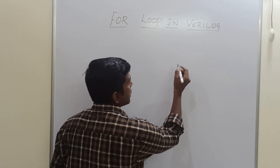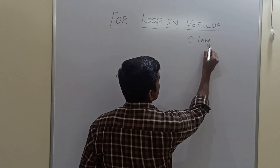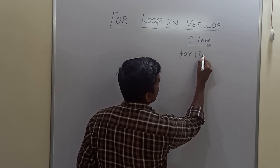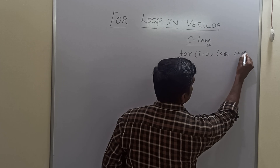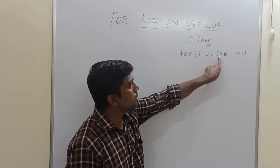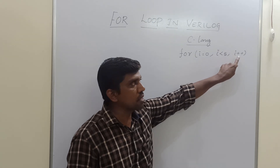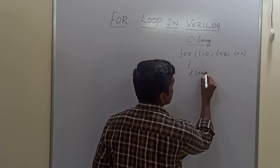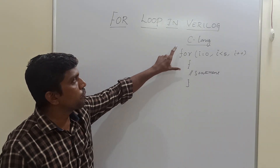Before that, let me write the syntax. In C language, the for loop is represented like this: for (i = 0; i < 5; i++). So the initial condition sets i equal to 0, the condition is i less than 5, and i++ is the step assignment. Then you have the open brace, write the statement inside, and then the close brace. That is the syntax for C language.